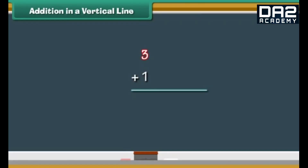What is three plus one? Write the two numbers one below the other. Draw three vertical lines next to three and one vertical line next to one. Count the vertical lines: 1, 2, 3, 4. Three plus one is four.